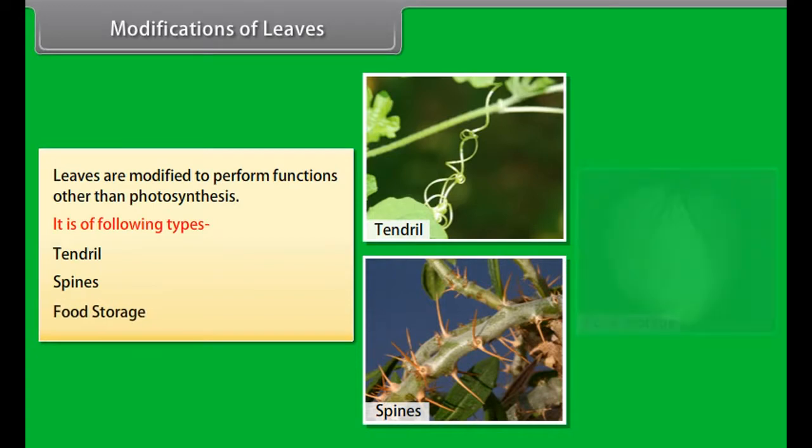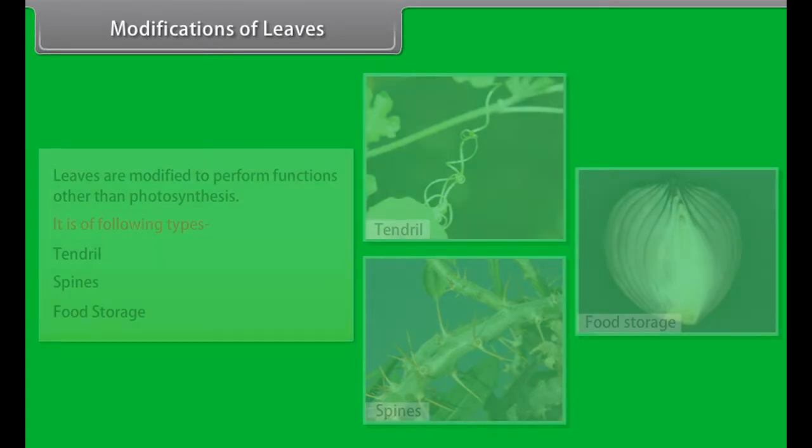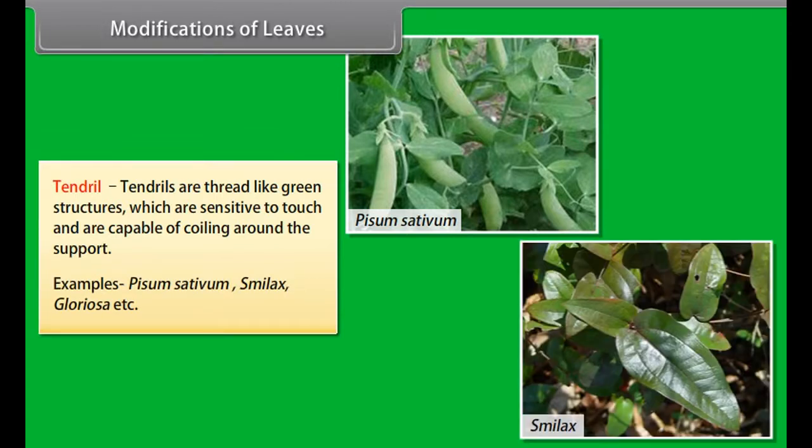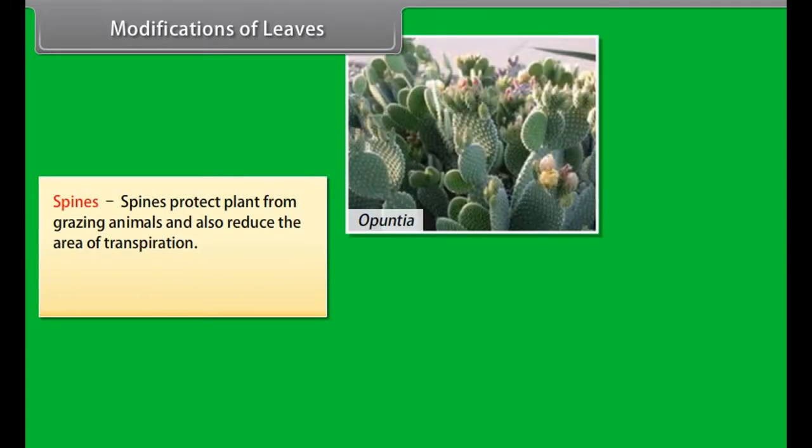Opposite: A pair of leaves arise at each node and lie opposite to each other, for example, Calotropis procera. Whorl: When three or more leaves arise at each node and are in a whorl or circle, for example, Nerium oleander.